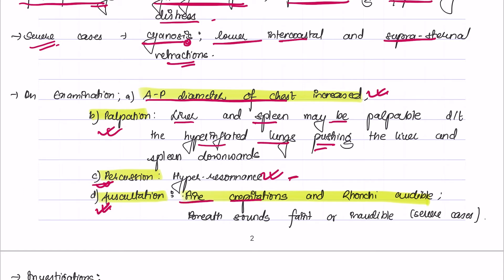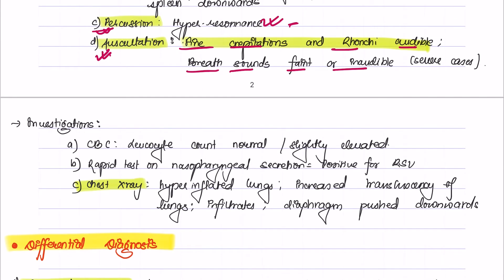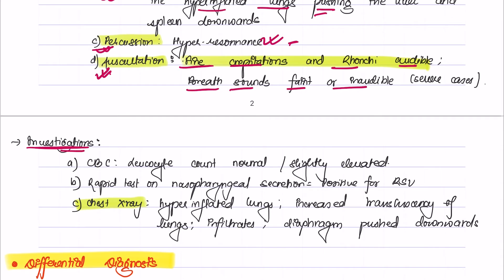The investigations for bronchiolitis include: Complete blood count can be done in which the leukocyte count may be normal or slightly elevated. Rapid test of nasopharyngeal secretion shows positive for respiratory syncytial virus. On chest X-ray, there will be hyperinflated lungs, increased translucency, infiltrates may be present, and the diaphragm is pushed downwards.